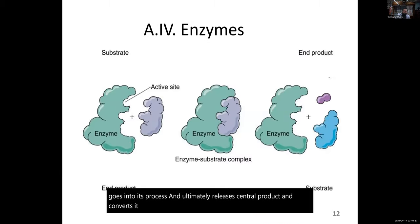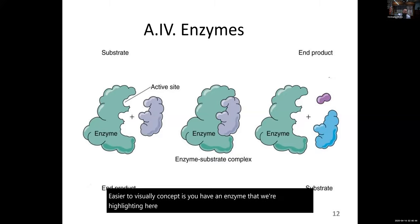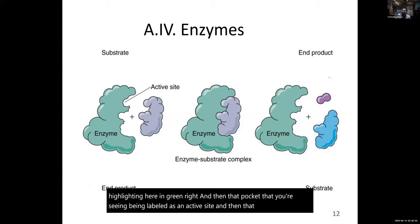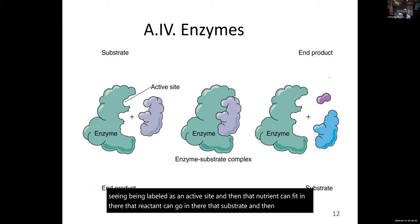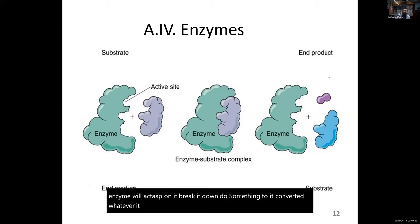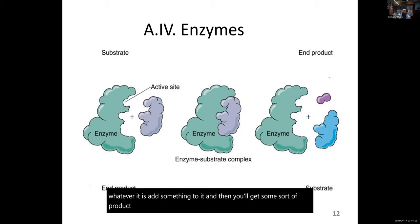A molecular model of an enzyme is shown here in whitish-blue colors, and you can see with the little arrow that little pocket — the active site — where your nutrient should fit. That's where the food goes in, gets processed, and ultimately releases some sort of product and converts it into energy. The enzyme is highlighted here in green, with the active site labeled, and the nutrient — the substrate — fits in there. The enzyme acts upon it, breaks it down, converts it, and gives some sort of product.